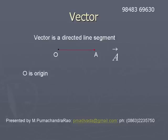O is known as the origin or tail of the vector, and A is the head or terminus of the vector.